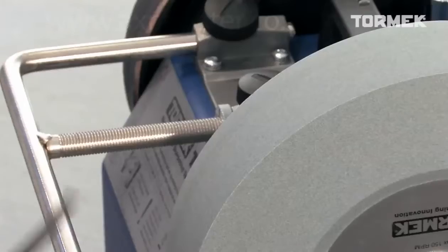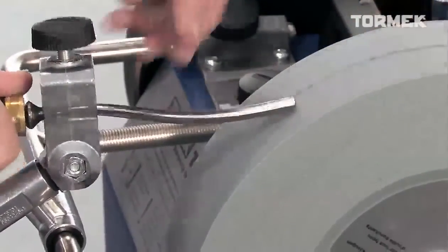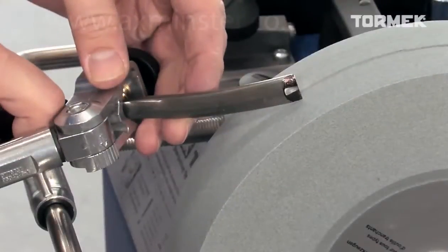With SVD 185, you can also sharpen wood carving tools, like this carving gouge. Color the bevel with a marker,